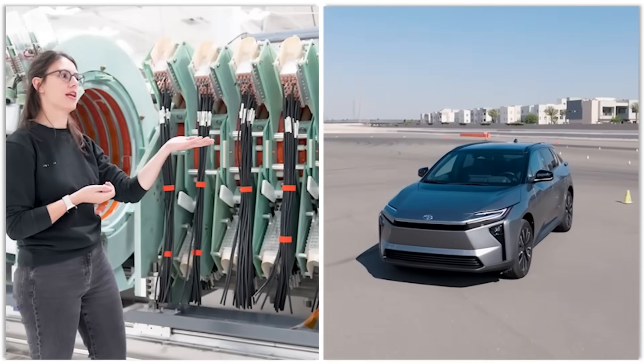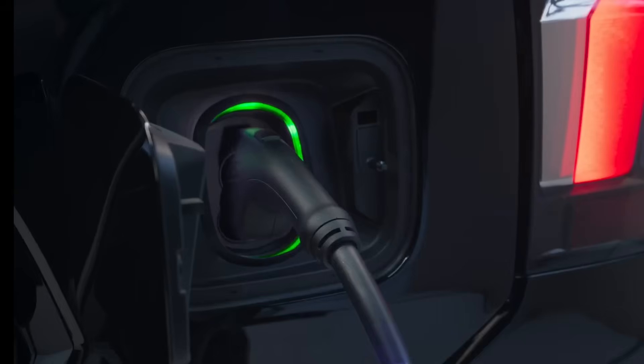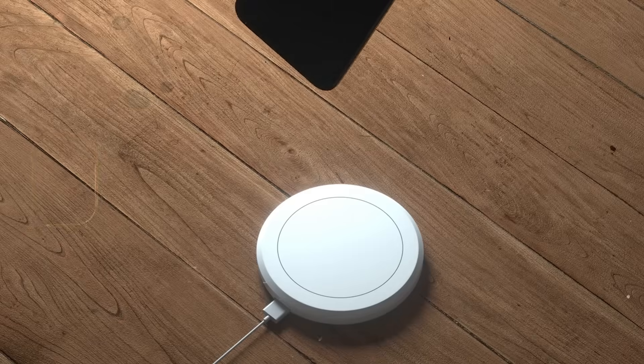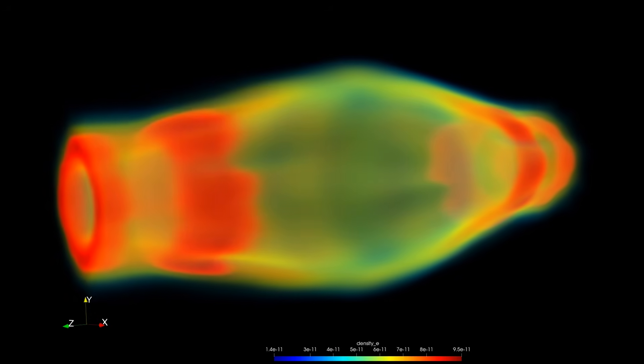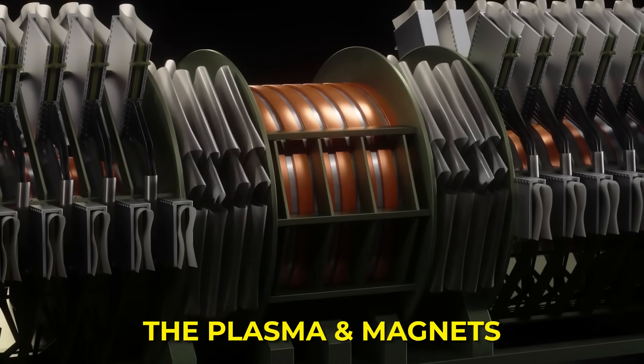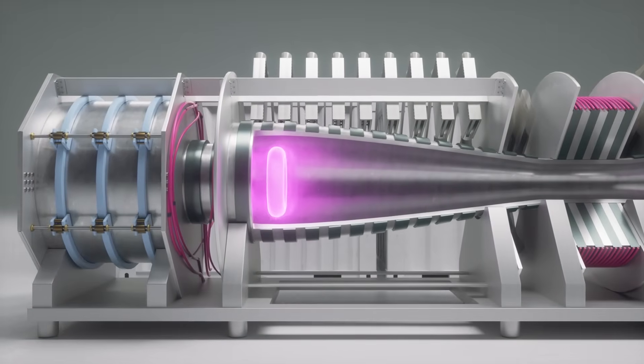Helion likes to compare it to regenerative braking in an electric car. Motion turns directly into charge. An inductive phone charger is another good mental model. Energy crosses a gap because fields couple, not because gears turn. In Helion's setup, the plasma and magnets are inductively coupled, so the pulse can recharge the system that launched it.